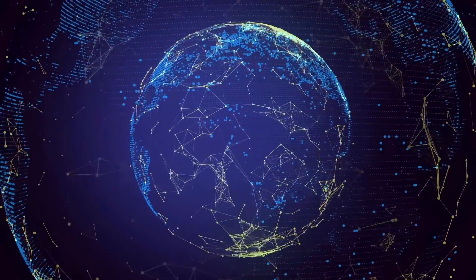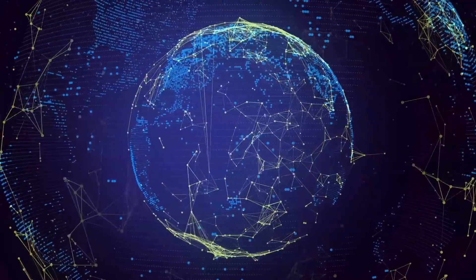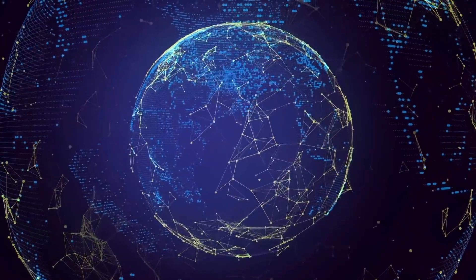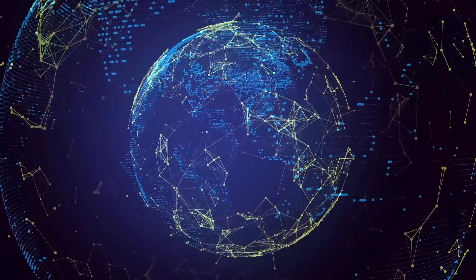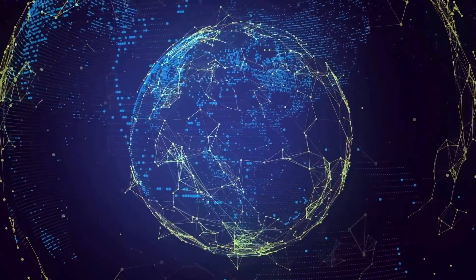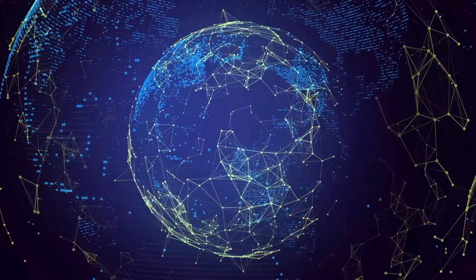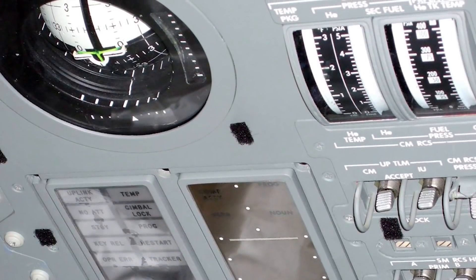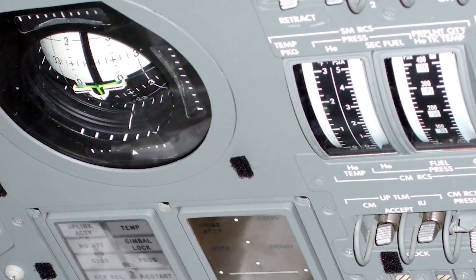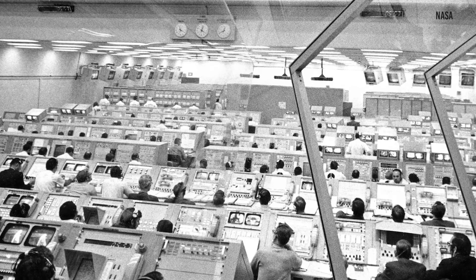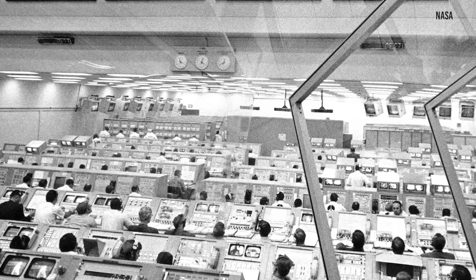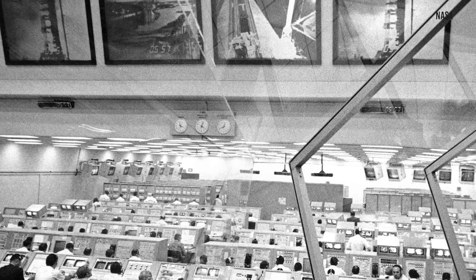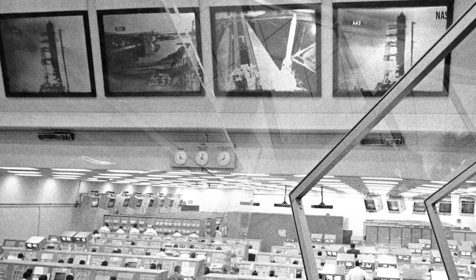History is replete with instances where a revolutionary new technology completely changes people's lives. The change is often so dramatic that people who lived before the technological leap have difficulty understanding how subsequent generations think. To make the point, predictive analysts compare modern smartphone technology to Apollo-era computers, reminding us that NASA computers had 73,728 bytes of memory while smartphones have up to 32 gigabytes—about 430,000 times the working memory of the Apollo guidance computer.